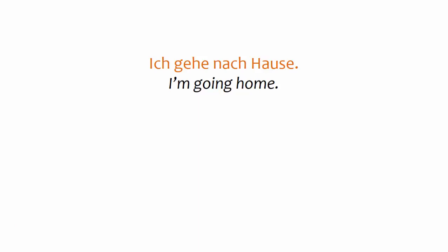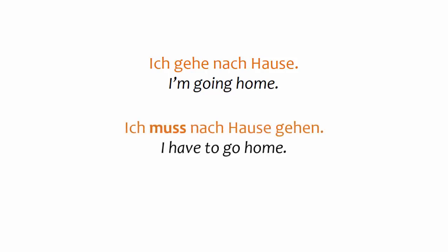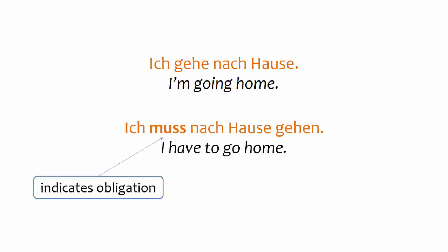Modal verbs are called that because they change the mode of the main verb. The meaning of the sentence you see here changes when you add the modal verb 'muss'. And that is the reason to use a modal verb — instead of saying that you are doing something, sometimes you want to say that you need to do it, or want to do it, or will do it, or can do it. Modal verbs let you express that meaning.